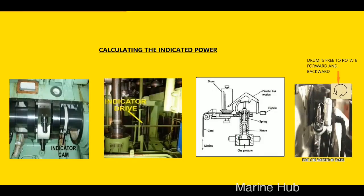As the piston moves upwards, the marker connected through the parallel link motion will move up on the drum drawing a vertical line. The height of the line is proportional to the maximum pressure in the cylinder, i.e. P max.